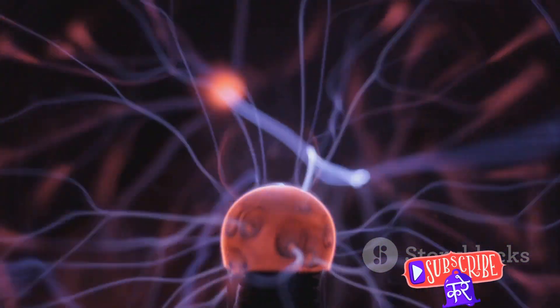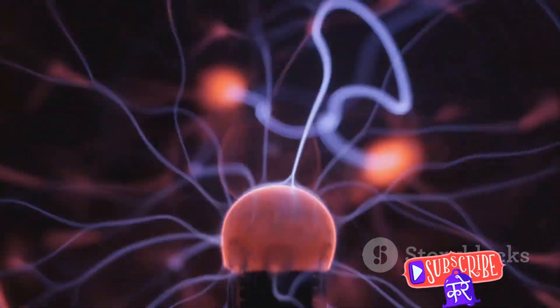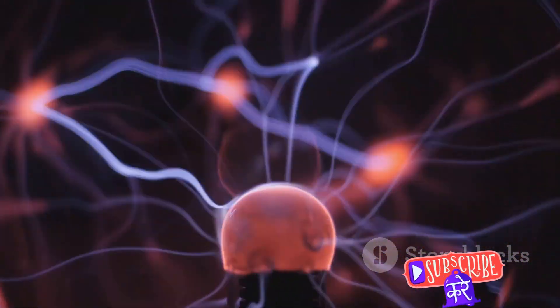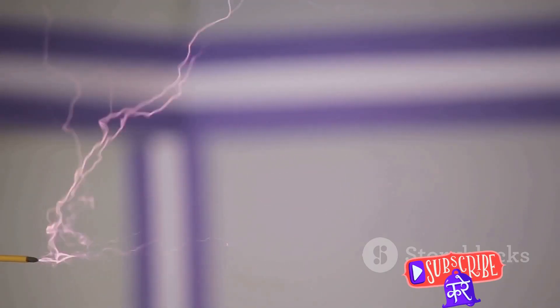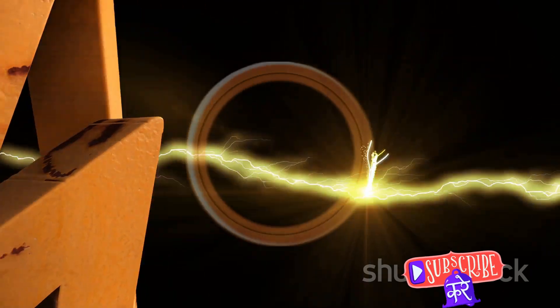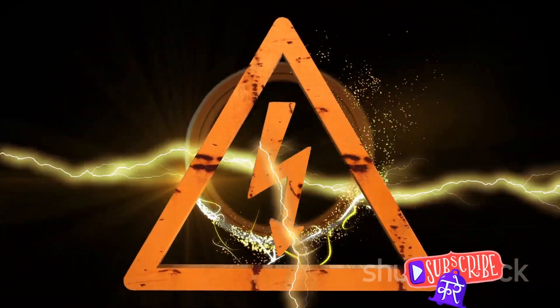The magnetic field created by the primary coil is the first step to achieving the Tesla coil's ultimate goal, high voltage. It's like the foundation of a skyscraper, setting the stage for the towering spectacle to be built upon it. The primary coil's magnetic field is the first step in the Tesla coil's high voltage production.